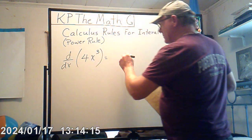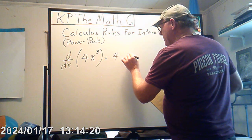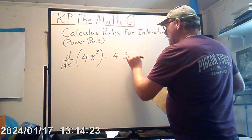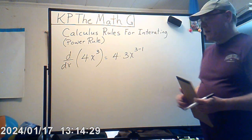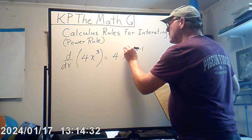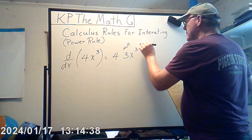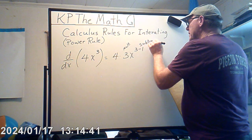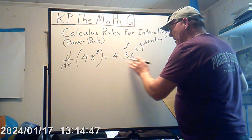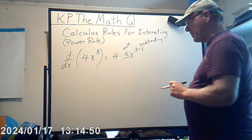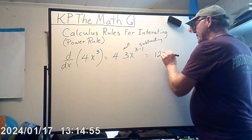Look what happens here: we are multiplying the front coefficient by three and we are reducing the exponent by one. So we're multiplying and subtracting when we take the derivative. And of course we know this result is 12x to the second power.